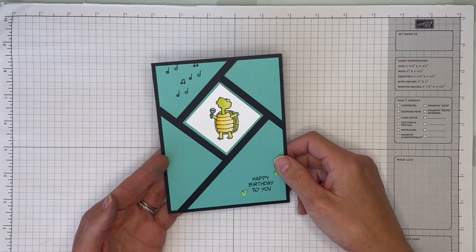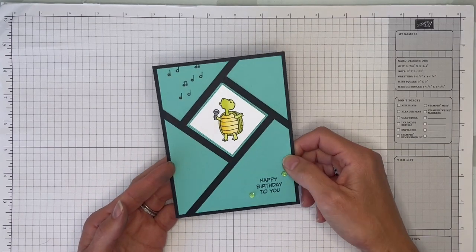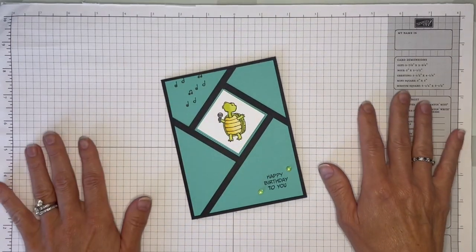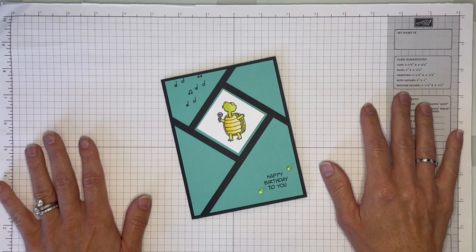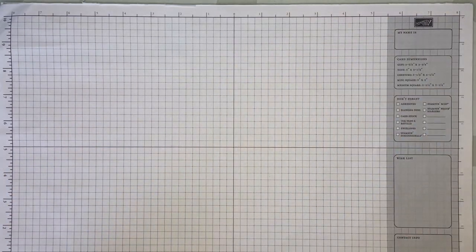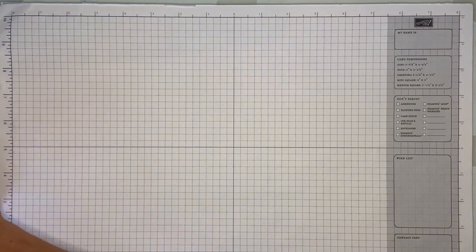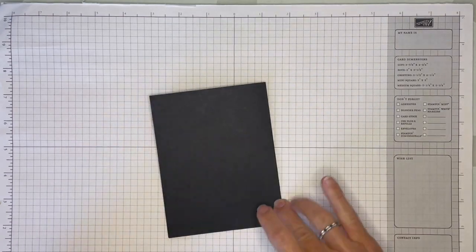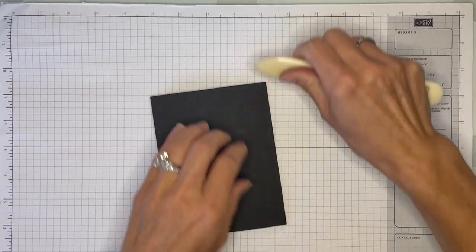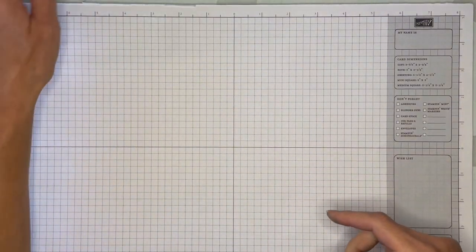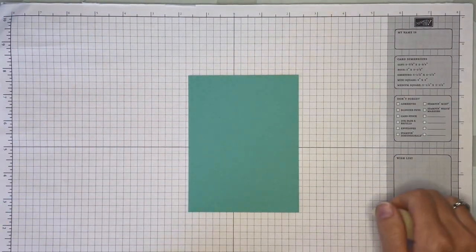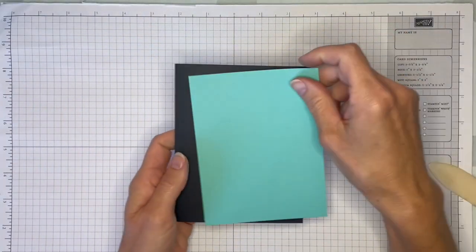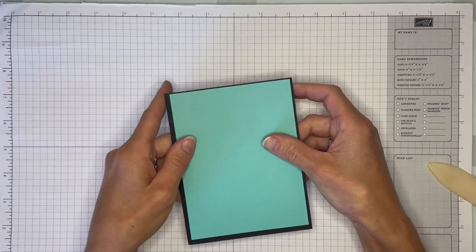I made this with my class the other day and I'm going to do a quick video so they can refer to it and you can make it along with us. Let's get started. We're just going to start with a basic black base and set that aside. We're going to build up the other pieces onto this piece of coastal cabana, and it's just slightly smaller than the base so you're going to end up with a nice border around the outside edge.